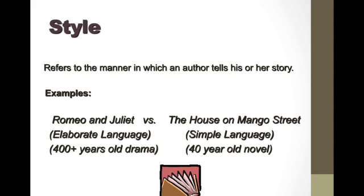Another difference in their style: even though we've got similar themes, we have a 400-plus-year-old drama in Romeo and Juliet, and the setting and characters are going to reflect that. The House on Mango Street, the novel, is only about 40 years old — therefore your characters are going to reflect that, it's going to be very contemporary, and the characters and setting will reflect that it's only a 40-year-old novel. So when we look at style, we take into context how it is specifically written and for whom.